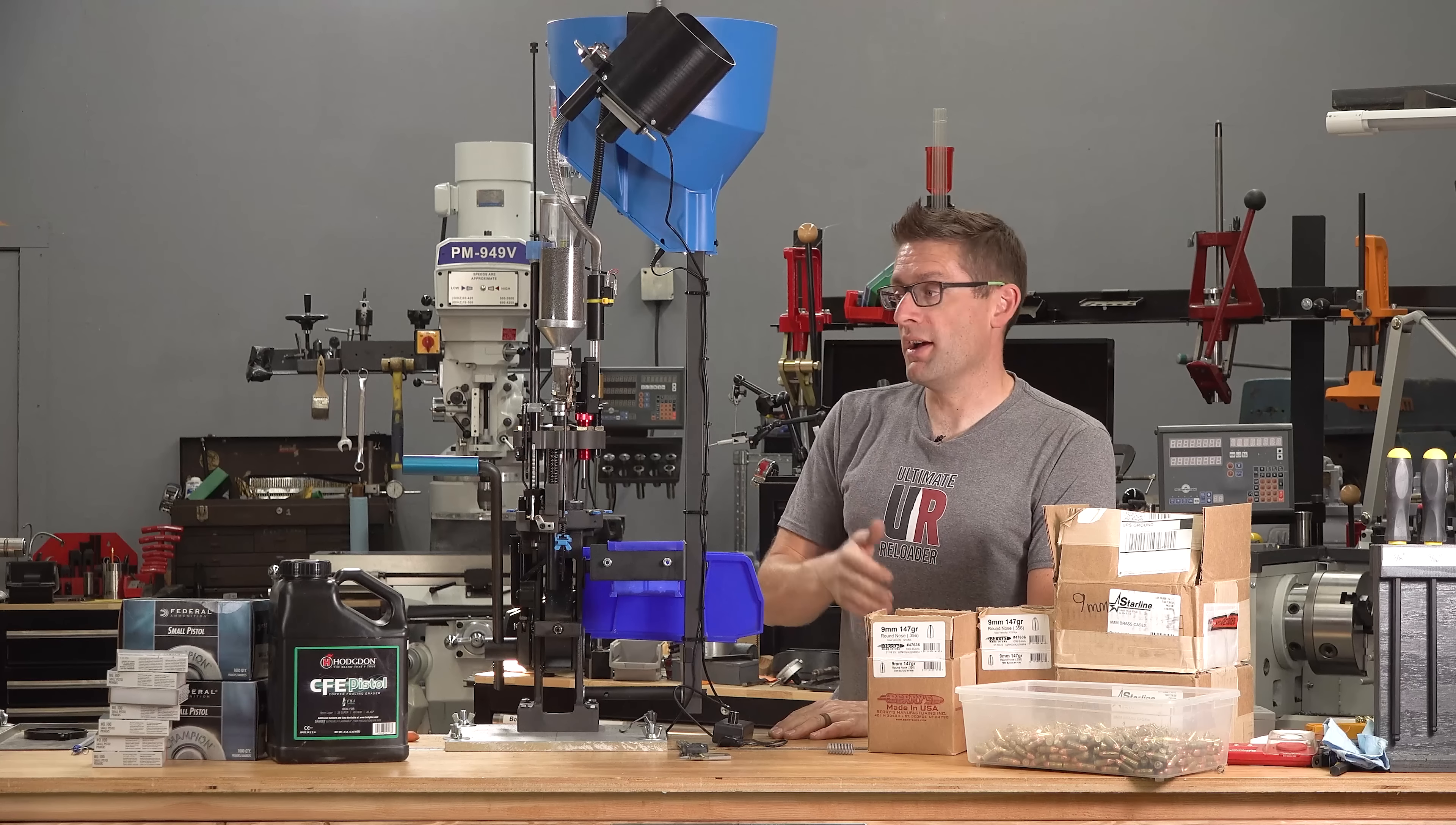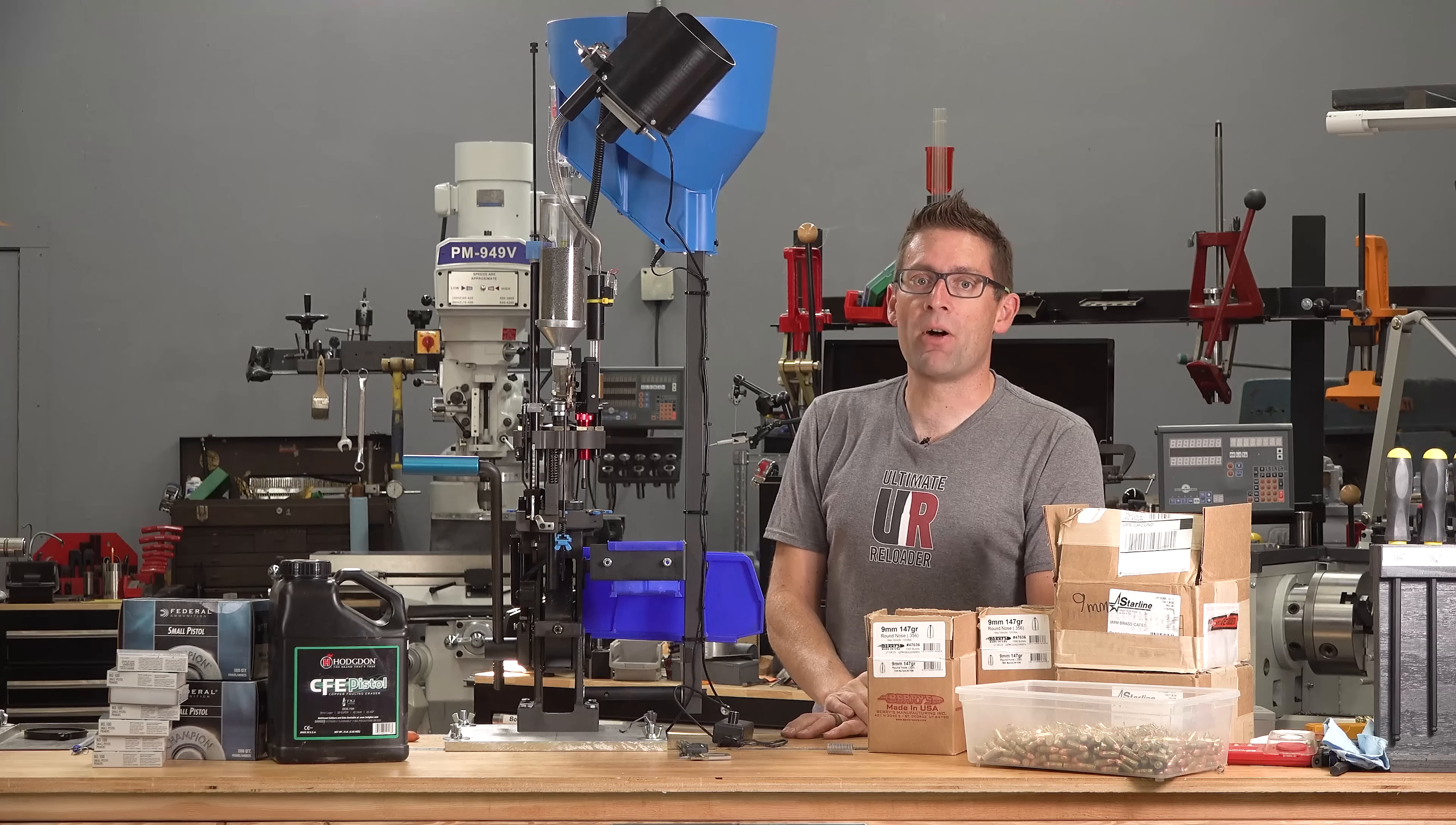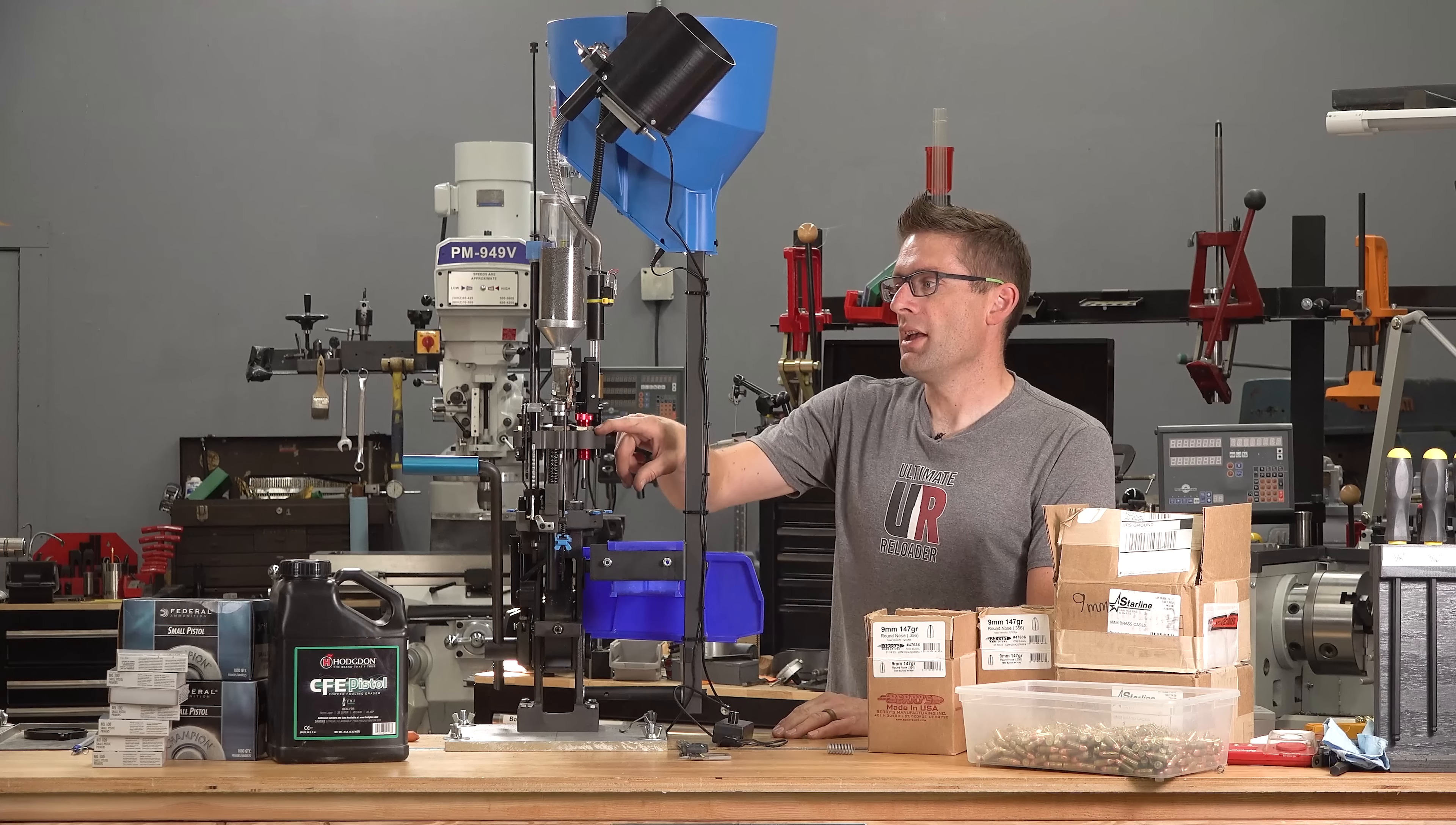And what I did to test that was I ran an empty case through, got a beep. Ran a charged case through, no beep. And then an overcharge or a double charge, a beep once again. Really important to cover all of those bases. One of the advantages of this Double Alpha magnetic powder check die is that it only beeps when there's a problem. It doesn't beep when the press is actuated when no cases are there, and so it's easy to set up. It's very self-contained. I really like the way that it works.